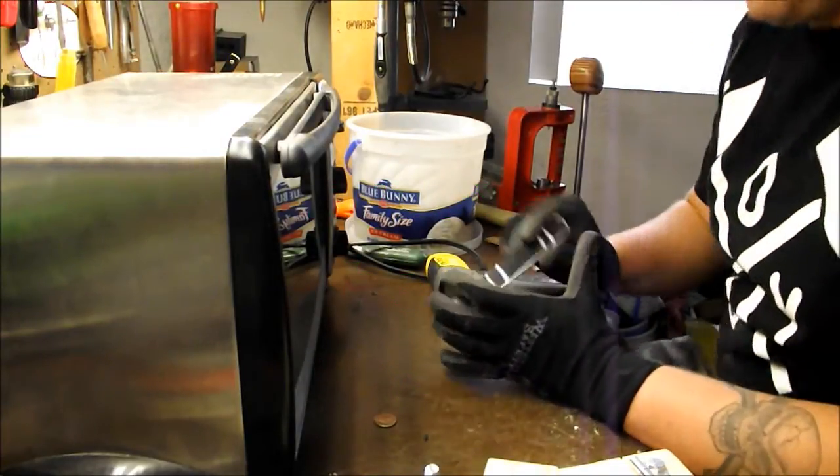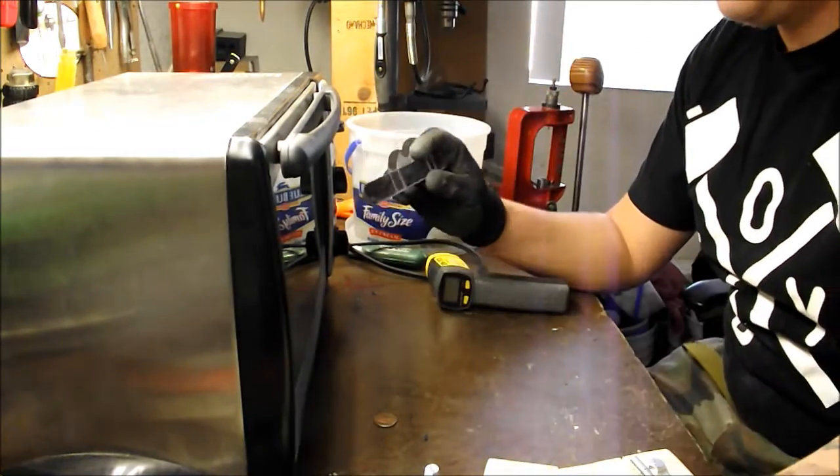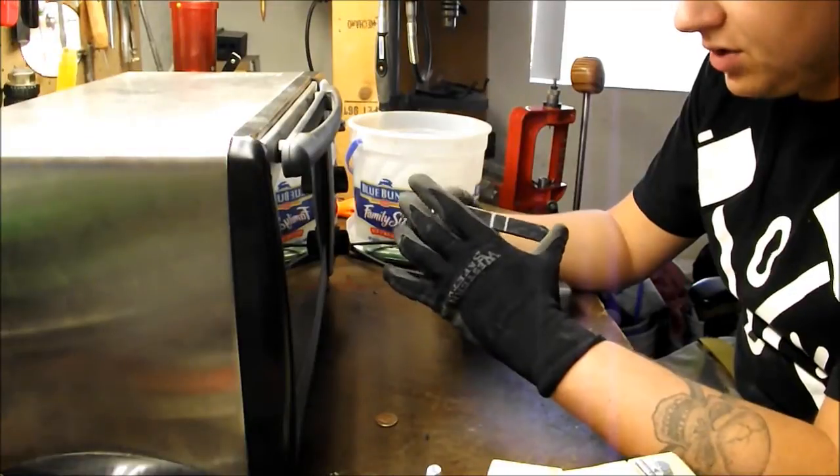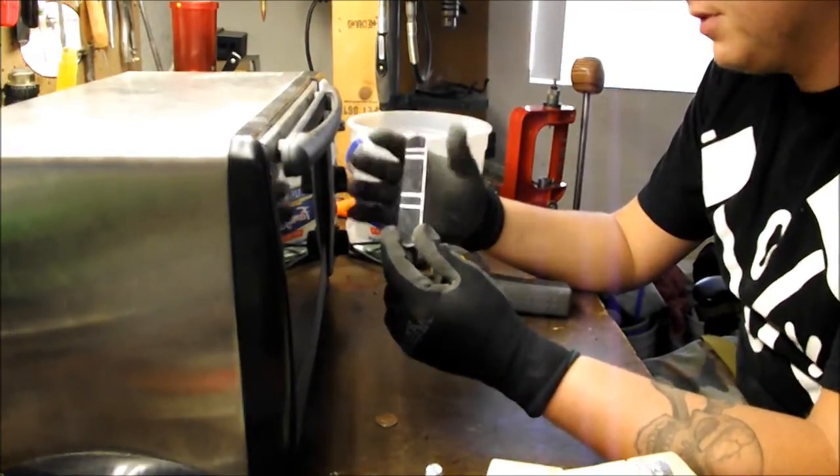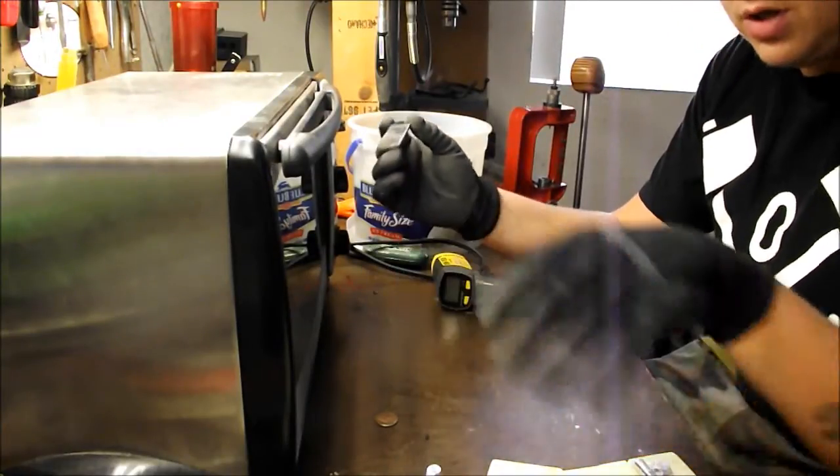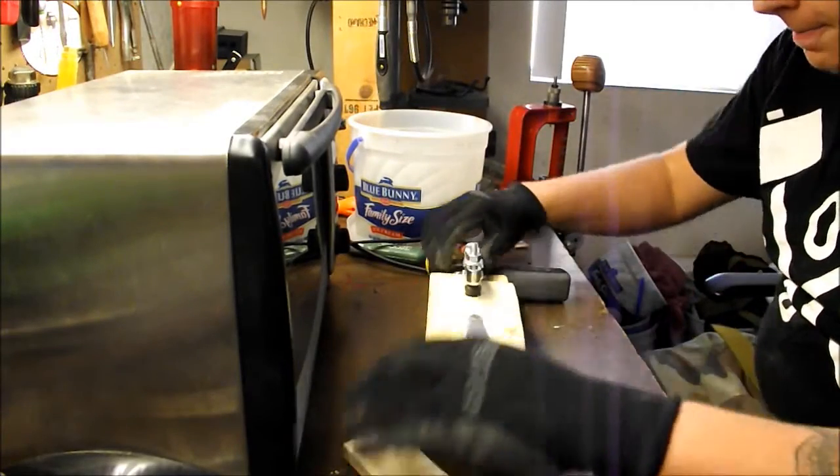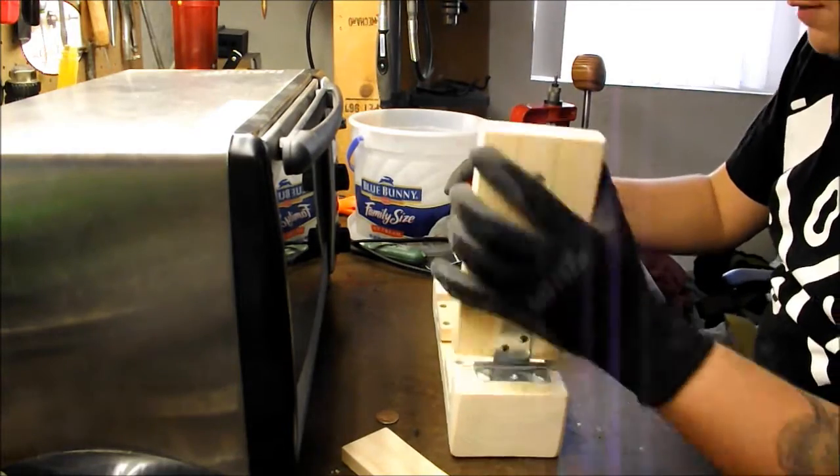Okay, today I'm going to show you how I make my belt loops for my Kydex holsters. I already got the piece cut out. It's about a six inch piece. I have a couple lines marked for the general layout of my belt loops. I have here my Kydex jig. I'll show you how that all works after the fact.